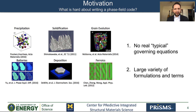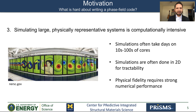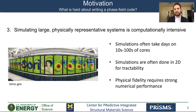Because of this, we have a large variety of formulations and terms, so a challenge for a phase field modeling framework is that it needs to be flexible enough to incorporate different governing equations. A third challenge is that simulating a large physically representative system is almost always computationally intensive, typically requiring tens or thousands of cores. Because of this, many studies are often done in 2D, but accurate simulations in 3D require strong computational performance.